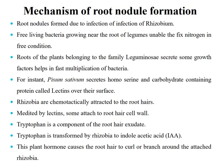For instance, Pisum sativum secretes homoserine and carbohydrate-containing proteins called lectins over their surface. Rhizobia are chemotactically attracted to the root hairs. When lectins are secreted on the root hair surface, Rhizobia are attracted towards root hairs and attach to the root hair cell wall. Tryptophan, a component of the root hair exudate, is transformed by Rhizobia to indole acetic acid, a plant hormone that causes root hairs to curl or branch around the attached Rhizobia.